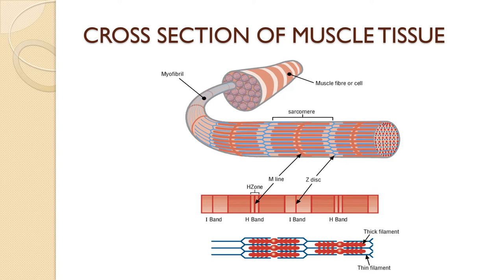Let's have a look at the cross-section of muscle. You can see the muscle fiber or cell on the rightmost top side of the figure, from where a myofibril is coming out. When we zoom into this myofibril we can see a sarcomere, and over the larger image of the sarcomere we can see the M line and different bands inside. When we look carefully into the sarcomere we can see the thick and thin filaments, as shown in the figure.